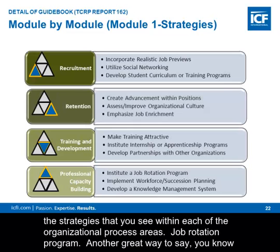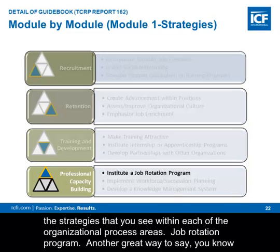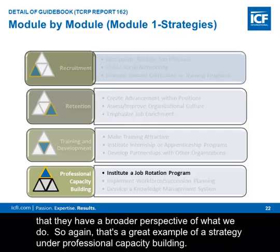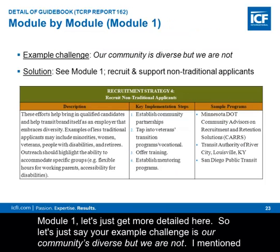Here are some of the strategies within each organizational process area. Job rotation programs are another great example — a way to help people feel like they're really a part of the organization and gain a broader perspective of what you do. That's a great example of a strategy under professional capacity building.